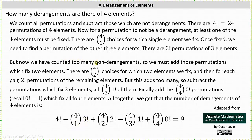But now we've counted too many non-derangements. We must add those permutations which fix two elements. There are four choose two choices for which two elements we fix, and then for each pair we have two factorial permutations of the remaining elements. So that gives us plus four choose two times two factorial.